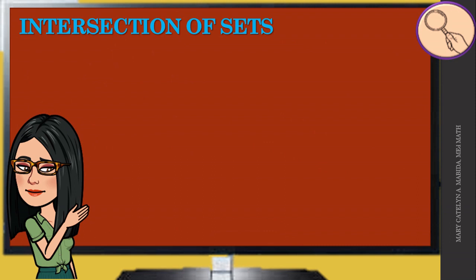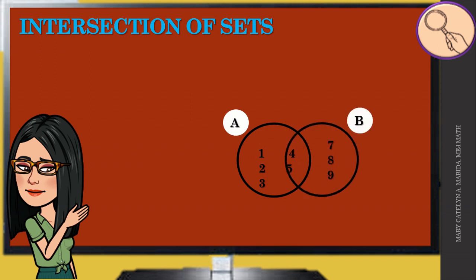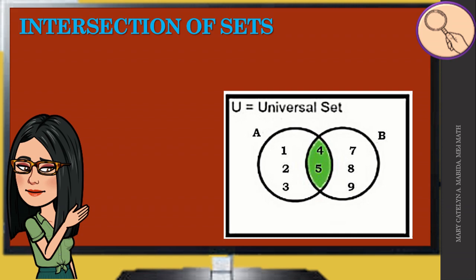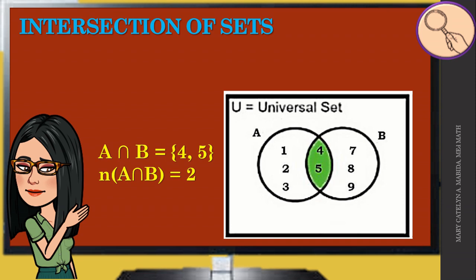Let's begin with the intersection of sets. We have two sets, A and B. Putting them together, we can see that there are elements in set A that are also found in set B. We shade those common elements. The shaded part shows the intersection of set A and set B, written as A ∩ B = {4, 5}. The cardinality of that intersection is two — there are two elements in the intersection.